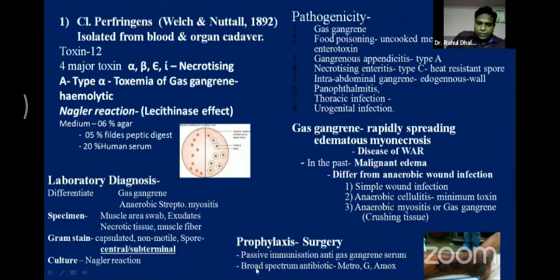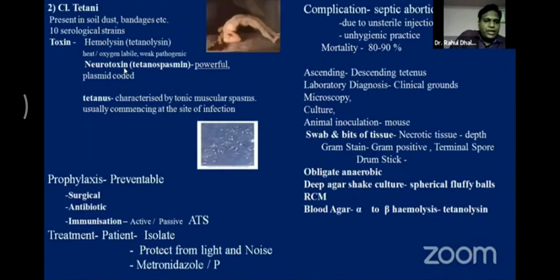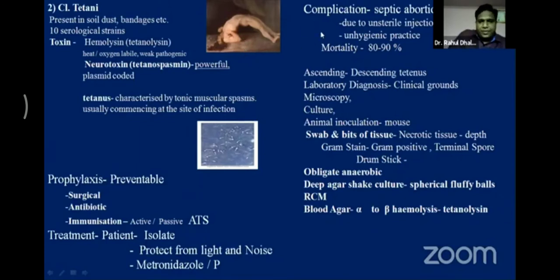Clostridium tetani produces two toxins: hemolysin and neurotoxin. The neurotoxin — also called tetanospasmin — is very powerful and causes tetanus. Tetanus is characterized by tonic muscle spasms, usually commencing at the site of infection. Complications arise due to unsterile injections or rusty metals — if injury occurs, tetanus can form. There are two types: ascending and descending tetanus.